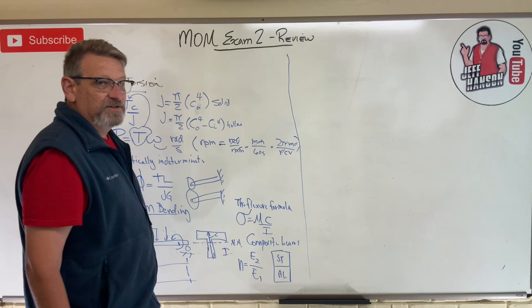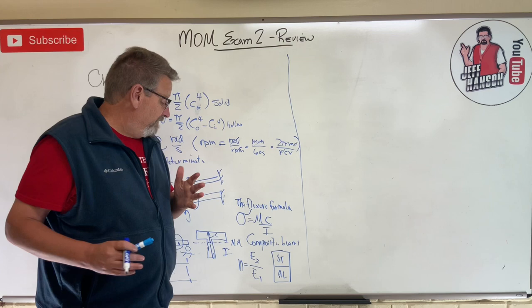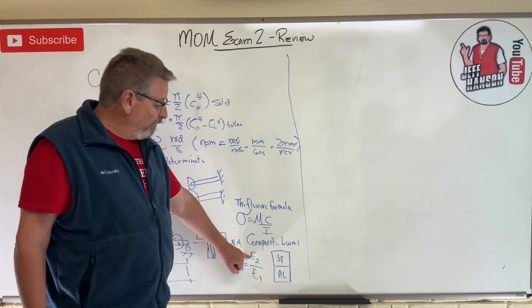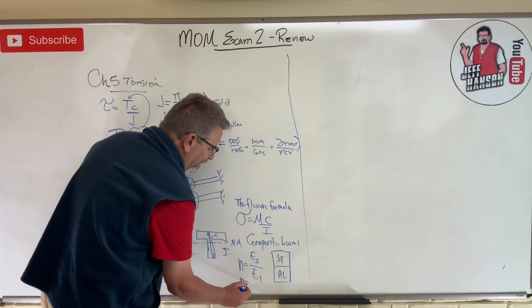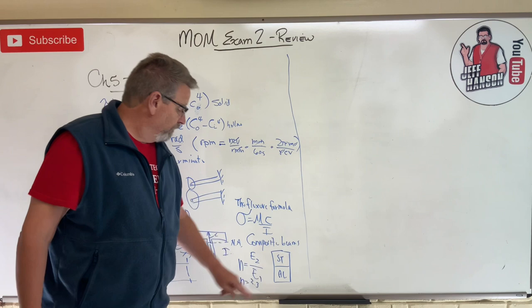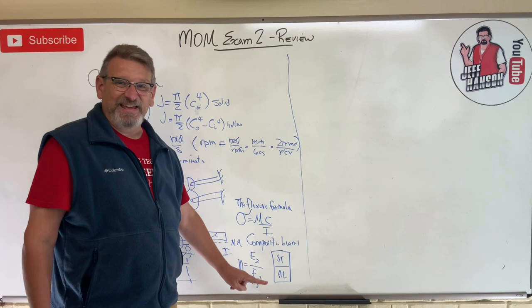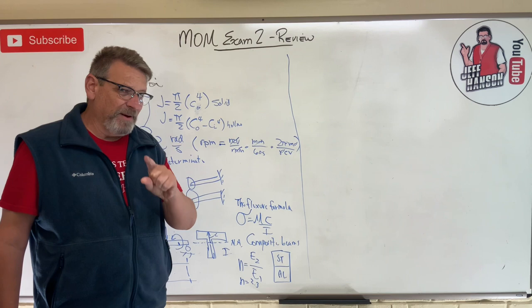So the modulus of elasticity of material two divided by the modulus of elasticity of material one. And students often ask me, well, which one do you use? Which one goes where? Which material goes where? And here's the way I do it. I always put the strongest material on the top, and that way n is always a number bigger than one. And I think to myself, okay, in this case, the steel is, let's say I get n equals, let's just for making up numbers 2.3. N is 2.3. Then I'm saying to myself, okay, n or steel is 2.3 times stronger than aluminum. So if I want to turn the aluminum into steel, I don't need as much of it. So I'm just going to take that aluminum dimension and divide it by 2.3. Go back and review those problems if you're confused.